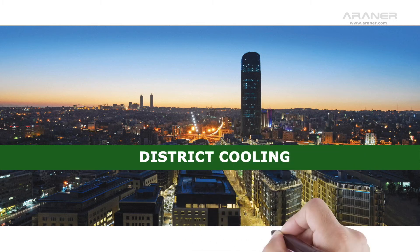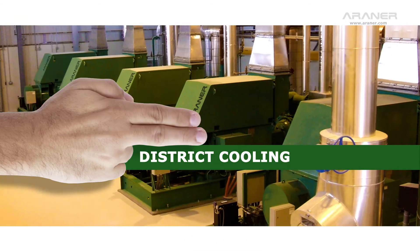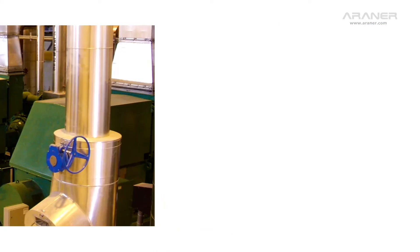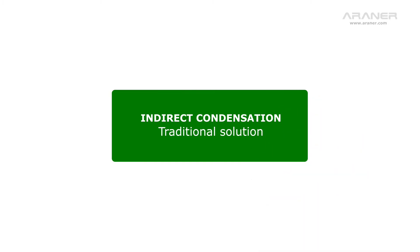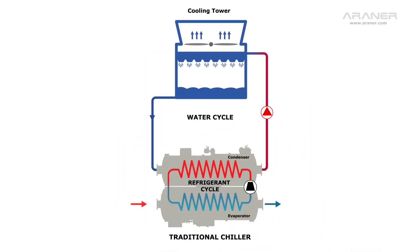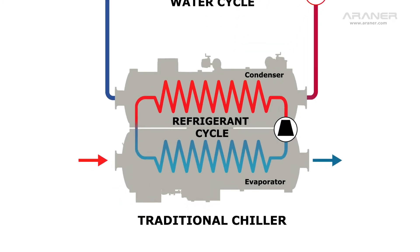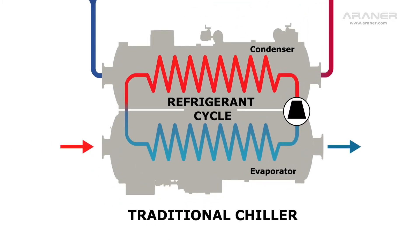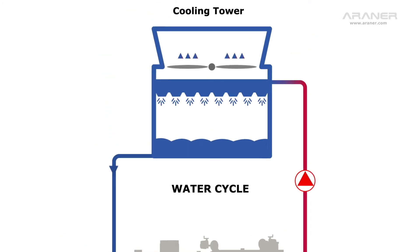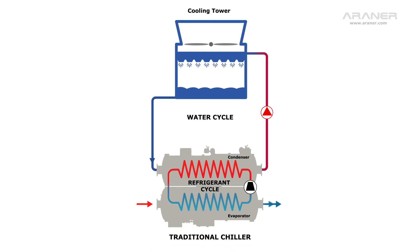In district cooling, during the refrigerant condensing process, the heat gained is rejected to the atmosphere. Traditionally, this process is done through indirect condensation in two stages. First, the refrigerant transfers the heat of condensation to a closed cooling water loop. Then, this water is cooled in a cooling tower and the heat is rejected into the atmosphere.